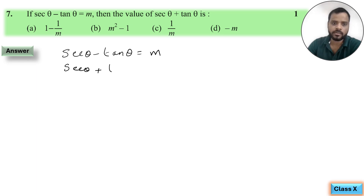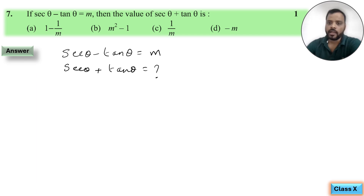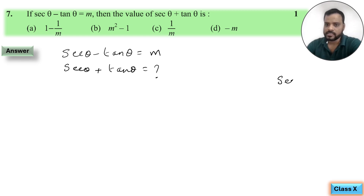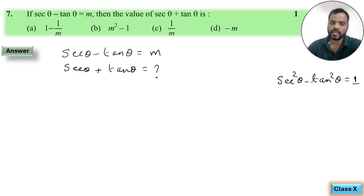हमारे पास तीन आइडेंटिटीज हैं। तो ऐसी कौन सी आइडेंटिटी है जो कि sec और tan को रिलेट करती है? वो है: sec²θ minus tan²θ is equal to 1 — यही आइडेंटिटी है जो sec और tan theta को रिलेट करती है।